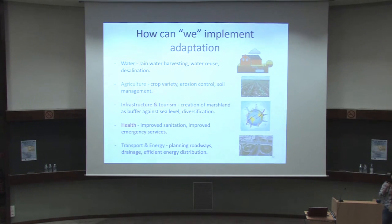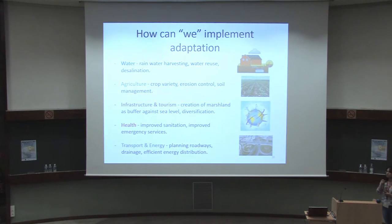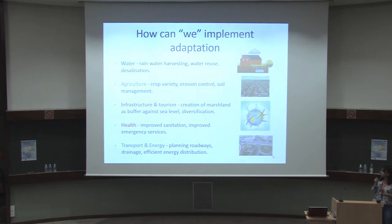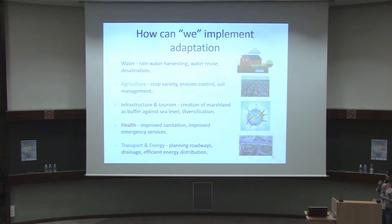We can have diversification in the tourism sector. For health, we are in great need of improved sanitation and emergency services. For transport, we can have better and more efficient planning of roadways and drainage systems. For the energy sector, we need a very efficient distribution of the power system.